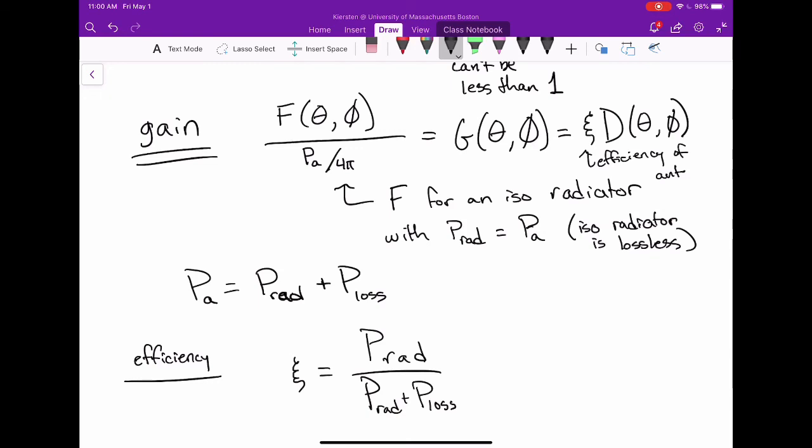So this means that gain doesn't necessarily, because of this efficiency term, have the same limits as directivity does. You could have a max gain less than one if your antenna has an isotropic pattern but is not lossless, then your gain, your max gain would be less than one. It's actually really hard to make an isotropic radiator, so that might not ever actually happen, but mathematically it's possible.